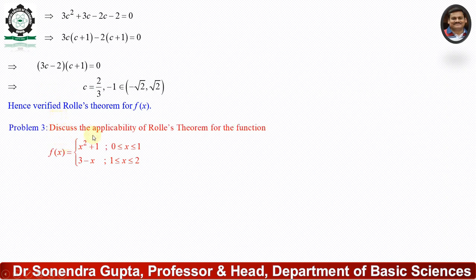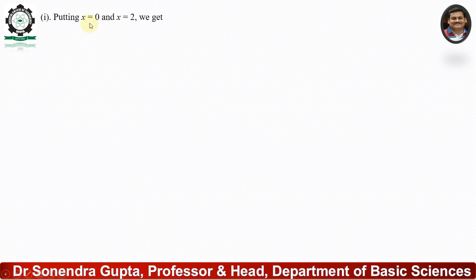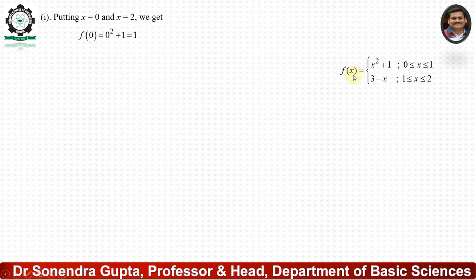Now we discuss the third question: discuss the applicability of Rolle's Theorem for the piecewise function f(x) = x² + 1 when x ∈ [0, 1], and f(x) = 3 − x when x ∈ [1, 2]. The required interval is [0, 2], so a = 0 and b = 2. We find f(0) = 0² + 1 = 1, and f(2) = 3 − 2 = 1. We have seen that f(0) = f(2) = 1, so the first condition is fulfilled.